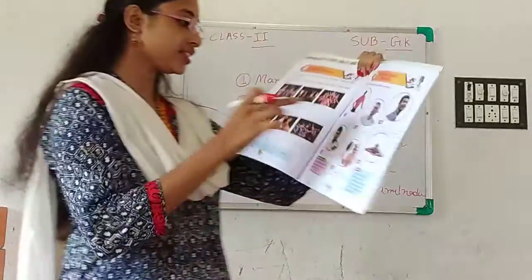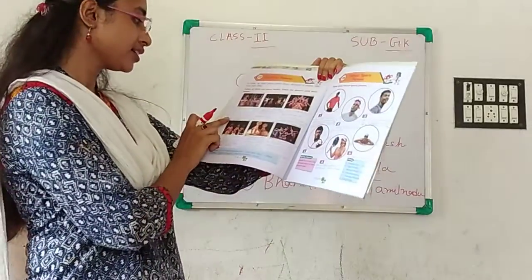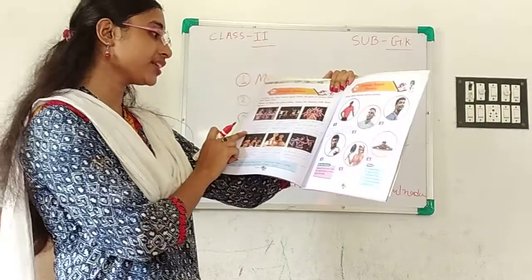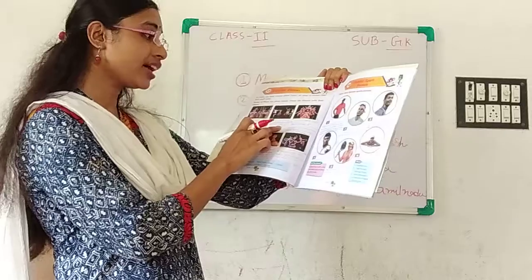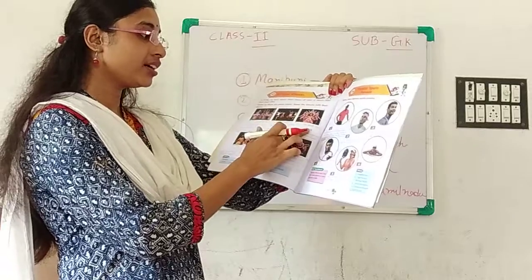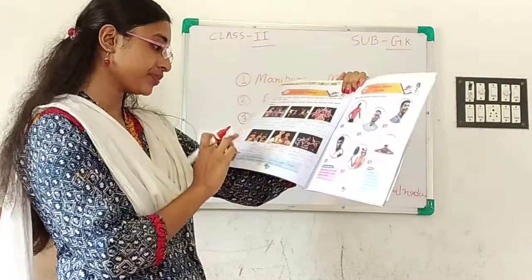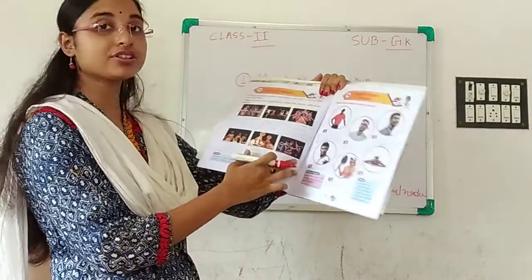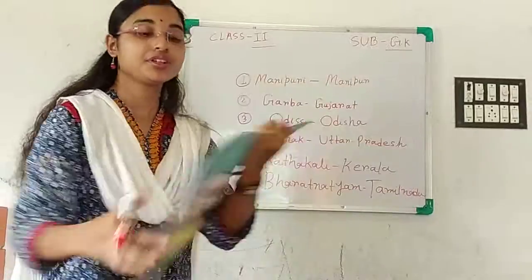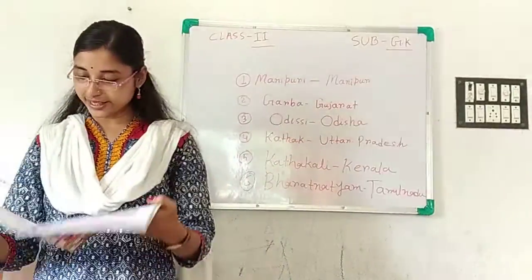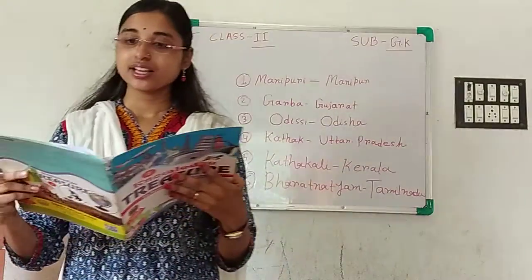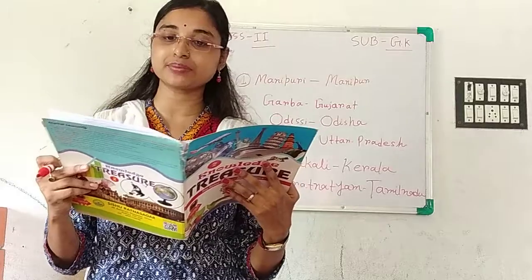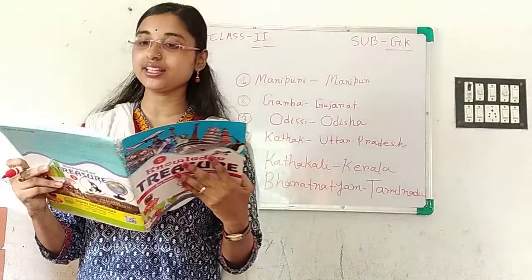So the dance forms are: 1. Manipuri dance, 2. Garba, 3. Odissi, 4. Kathak, 5. Kathakali, 6. Bharatnatyam. Now go to the next page, page number 25, chapter number 18: Famous Sports Persons.